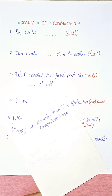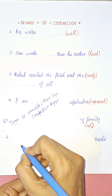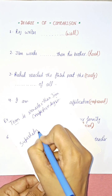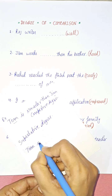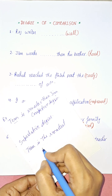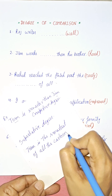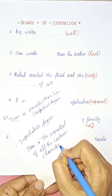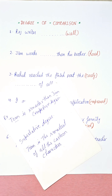Now let's talk about superlative degree. In the superlative degree of adjective, we compare three or more persons, animals, or things. For example, 'Tom is the smartest' — comparison is being made among more than two.